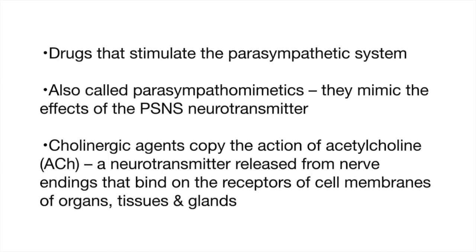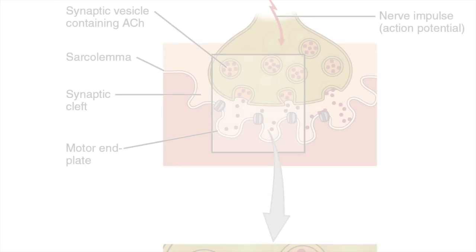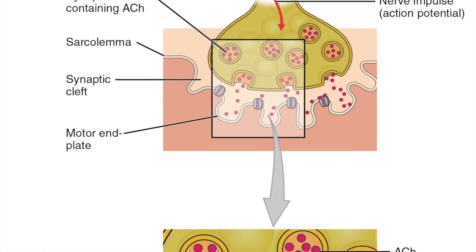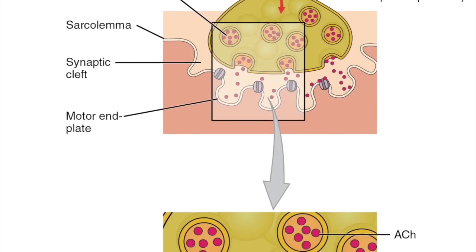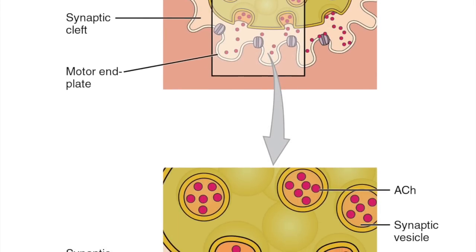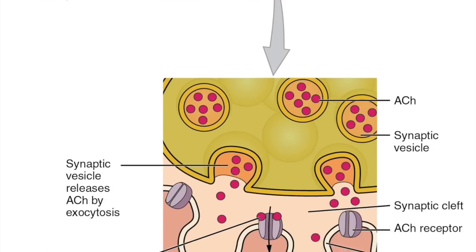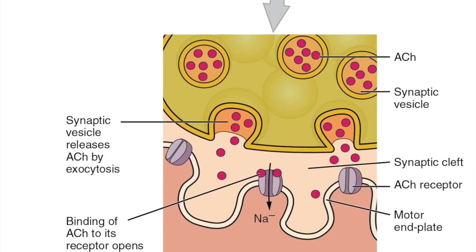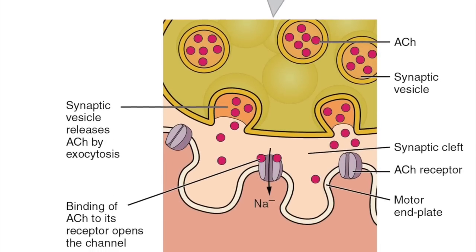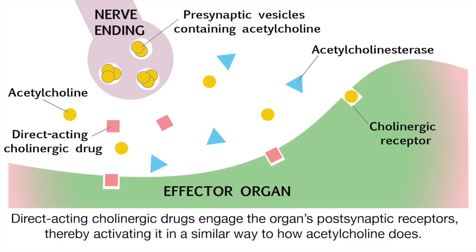Cholinergic agents are drugs that stimulate the parasympathetic system. They are also called parasympathetic mimetics, as they mimic the effects of the PSNS neurotransmitter. Cholinergic agents copy the action of acetylcholine, a neurotransmitter released from nerve endings that binds on the receptors of cell membranes of organs, tissues, and glands. There are two types of cholinergic drugs: direct acting and indirect acting.